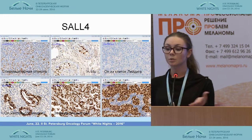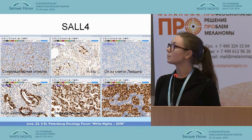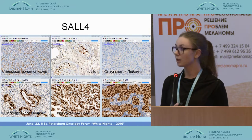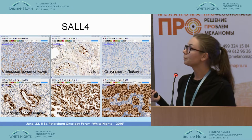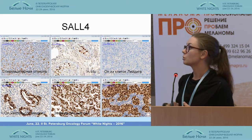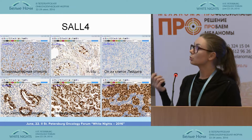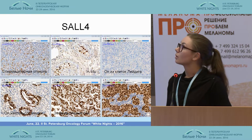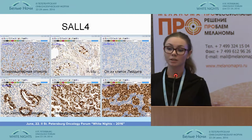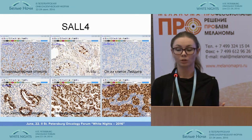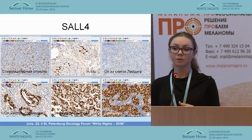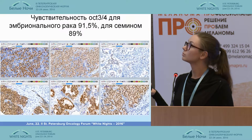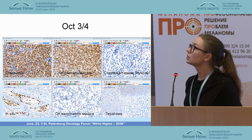The transcription factor OCT3/4 is positively expressed with nuclear coloring and is present in all germ cell tumors. Here we can see the positive reaction in seminoma and also in embryonal carcinoma. Expression of this antibody is also present and can be used to differentiate different types of germ cell tumors from other types of this disease.